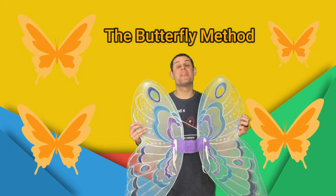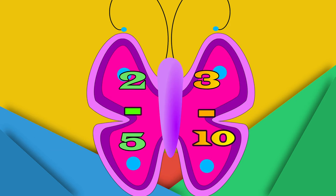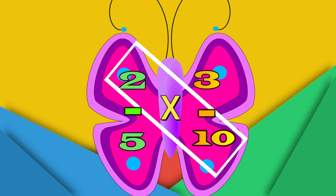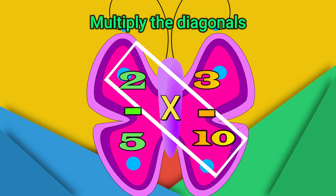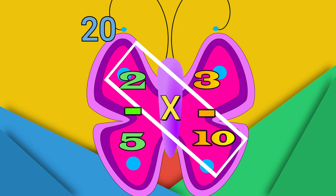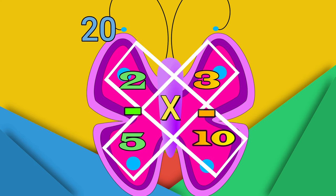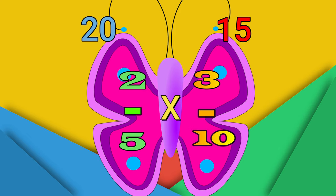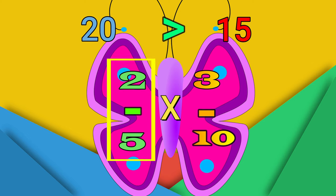Another strategy you could use to compare fractions is the butterfly method. Let's say you're comparing the fraction two fifths and three tenths. What you want to do is set up the fractions and cross multiply, just like a butterfly. You're going to multiply two times ten and write that number right above the two. Then multiply three times five and write the number right above the three. So at the very top you have two numbers: 20 and 15. You know that 20 is greater than 15, so that fraction on that side is the greater fraction.